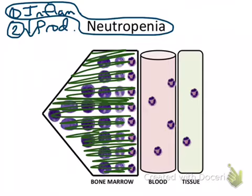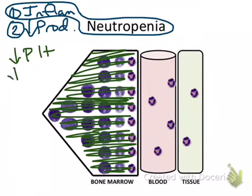To diagnose a decreased production neutropenia, you look at what the other cell lines are doing. Selective decreased production of neutrophils without decreased production of other cell lines is fairly uncommon — usually it's more of a generalized bone marrow disease. You will look for decreased platelet production and a non-regenerative anemia.